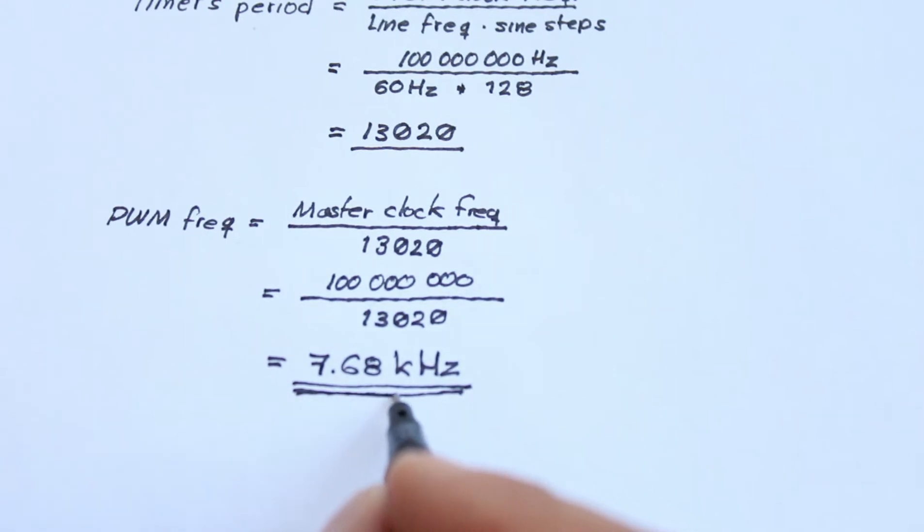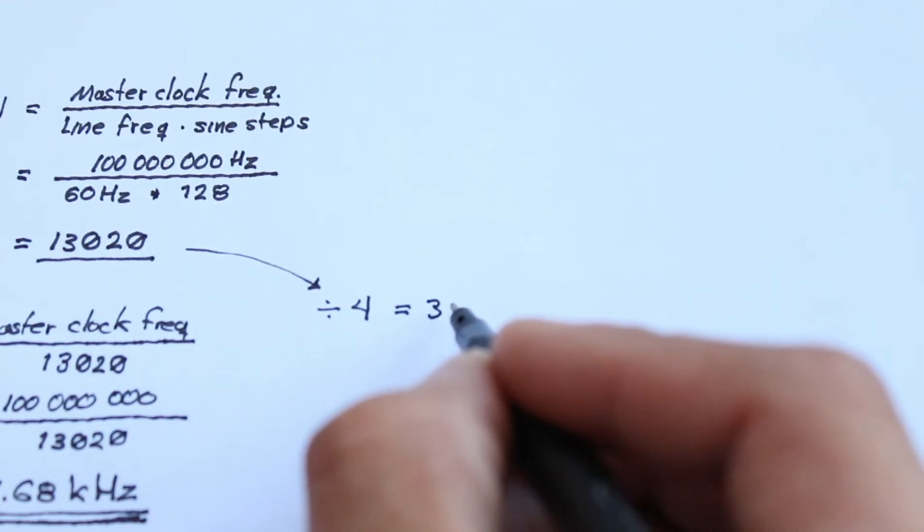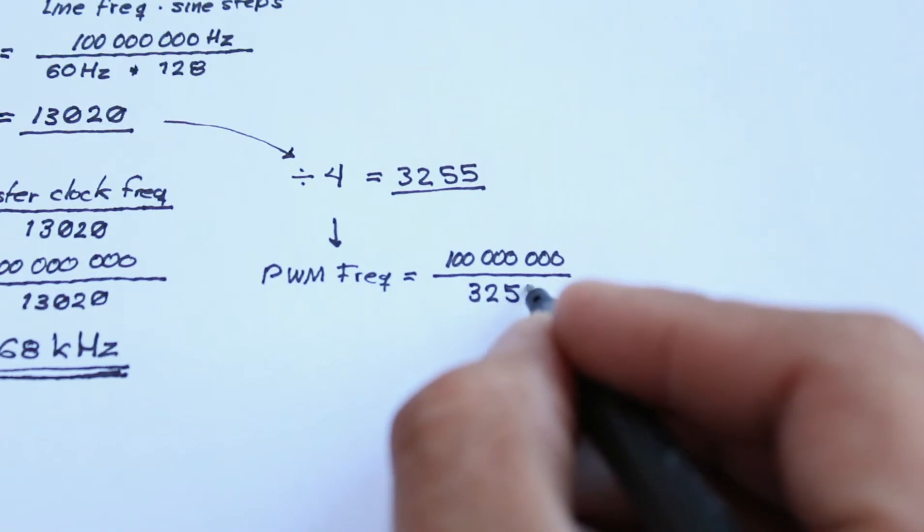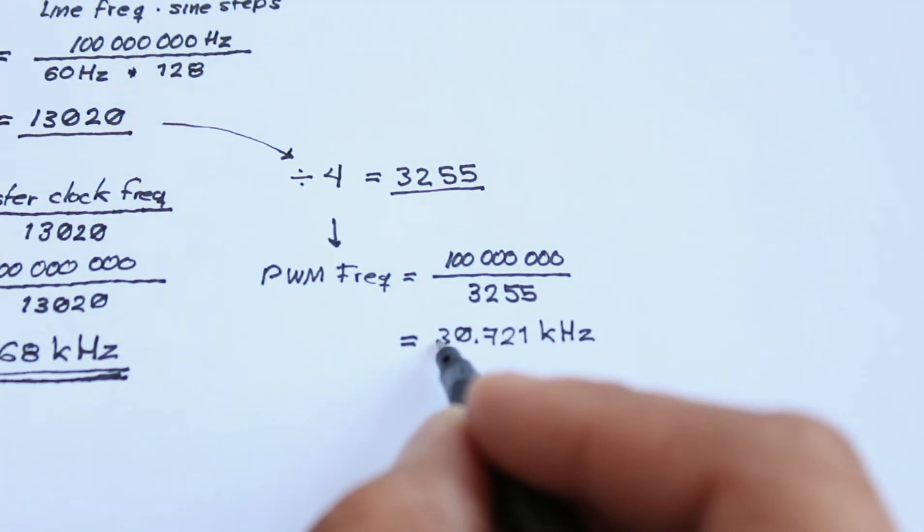which is quite low for a coil's commutation. To increase the commutation frequency, I divide 13,020 by 4, which results in 3,255. With this later value, the commutation frequency is around 30 kHz. I think it's much better.